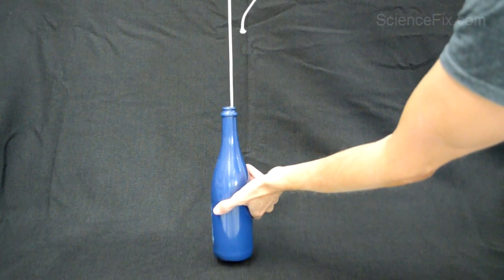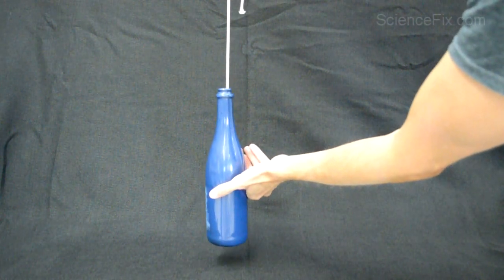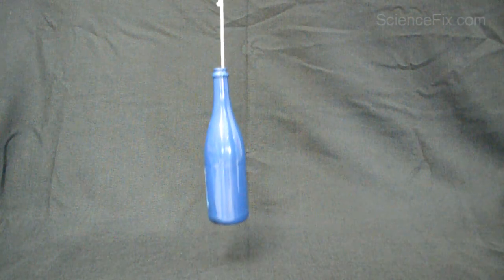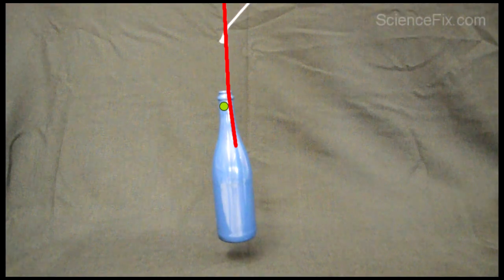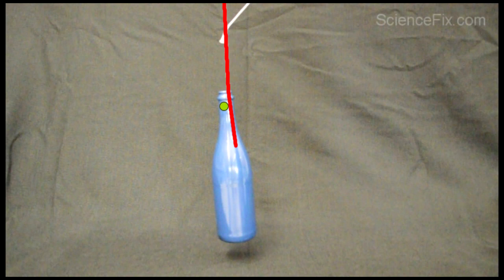If you pull up on the rope, the cork stays there in the neck and it rubs up against the rope and against the bottle, providing a friction force. The cork is pretty rough, so it provides a great friction force against the rope, and that's why the bottle doesn't fall with gravity.